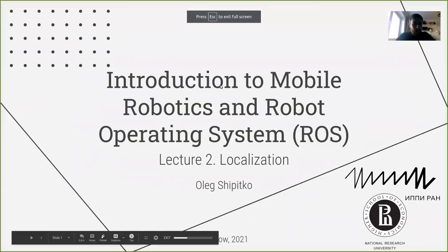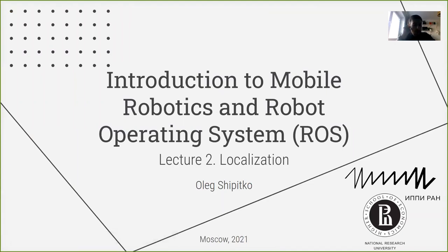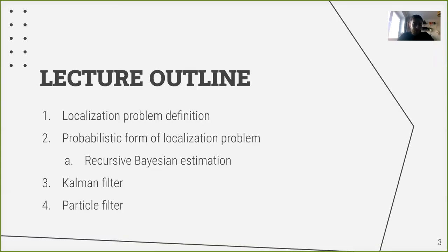Good morning. This is the second lecture of the Introduction to Mobile Robotics course, and today's lecture is dedicated to localization. You can scan the QR code to open the presentation on your device or use the short link below. Today we will first define the localization problem, then see how localization can be defined in probabilistic form using recursive Bayesian estimation, and then discuss two solutions: the Kalman filter and the particle filter.